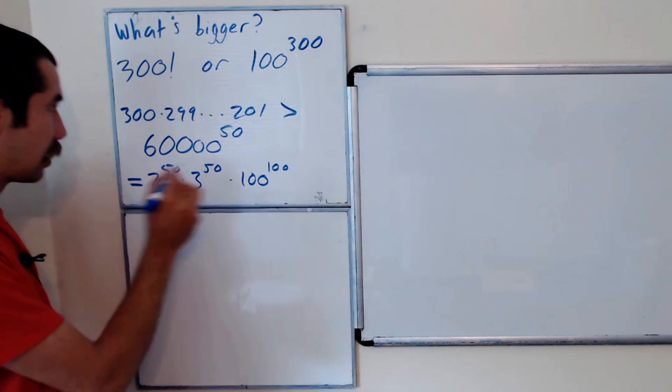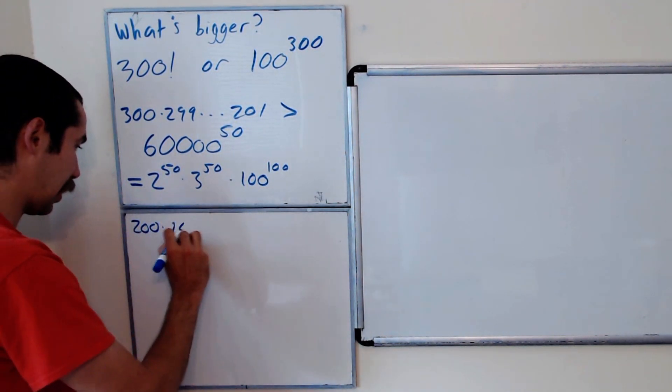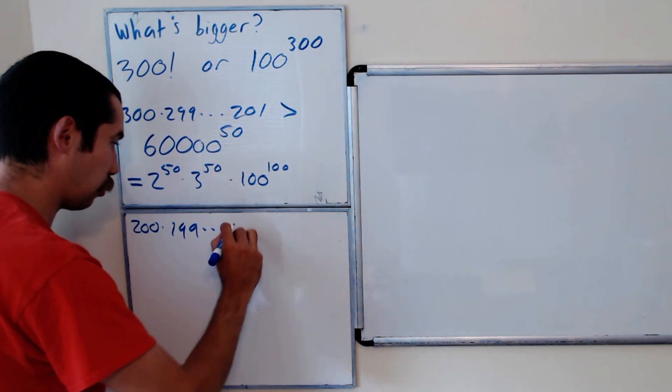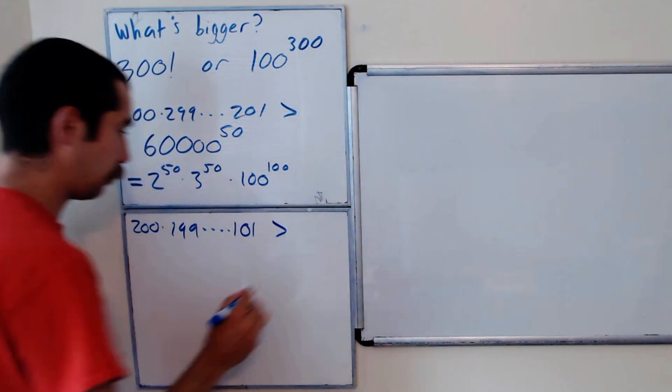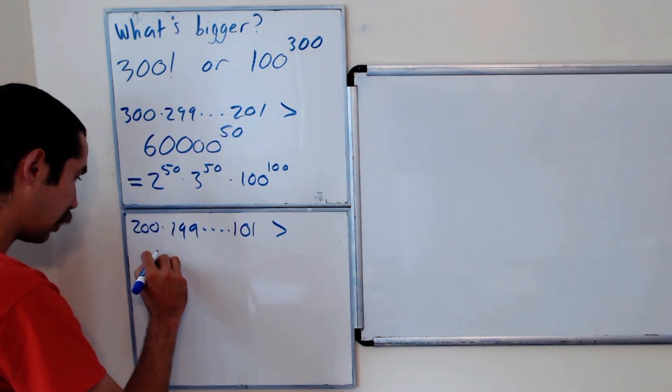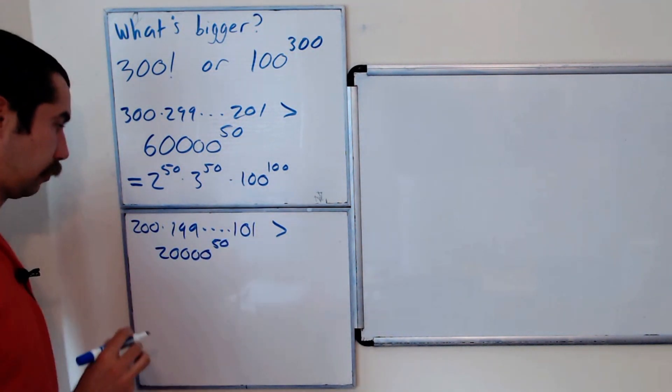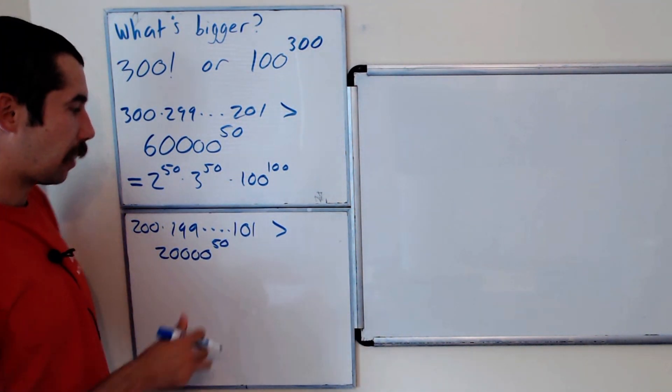Okay, let's go with the next 100. So 200 times 199 all the way down to 101. Well, that's greater than 20,000. They get by the same argument, 20,000 to the 50 power. All right, by the same argument, we do 200 times 101, 199 times 102,